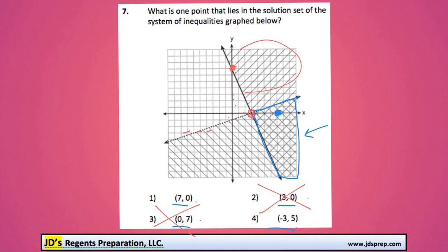And then the last one, (-3, 5), is down here. Also not good.